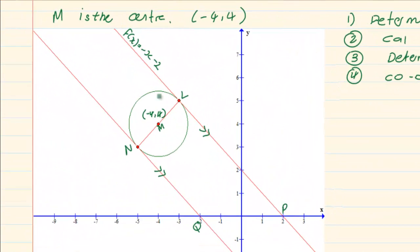Now what they are saying is M is the centre at (-4, 4). Now that becomes very important because if M is the centre then this is radius and LP and NQ are tangents which mean immediately we know this is 90 degrees.